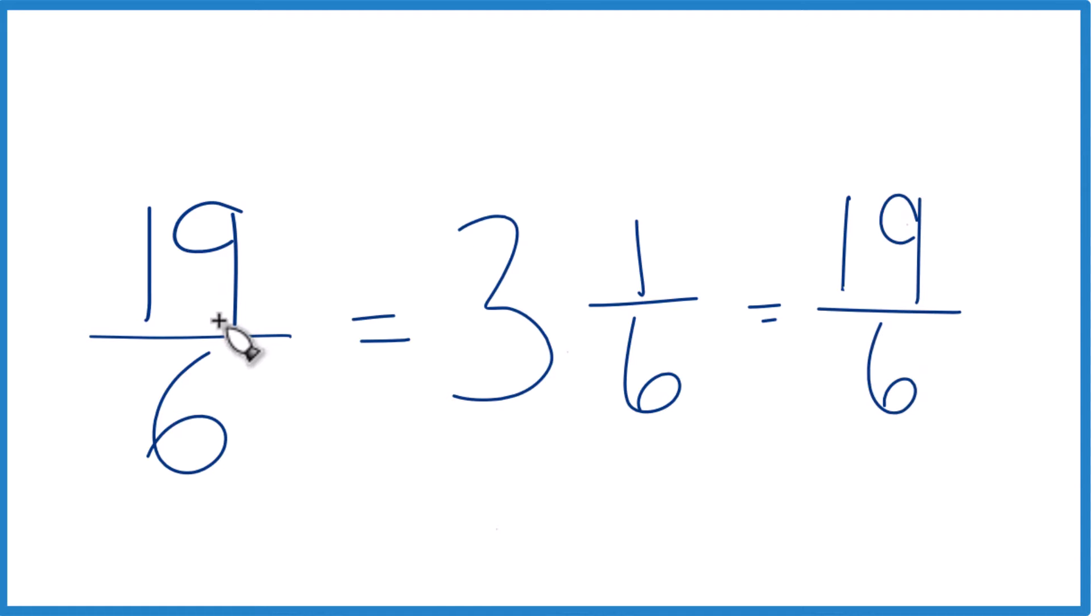That's what we started with, so we did it correctly. It's Dr. B, writing the improper fraction 19/6 as a mixed number. The answer is 3 and 1/6. Thanks for watching.